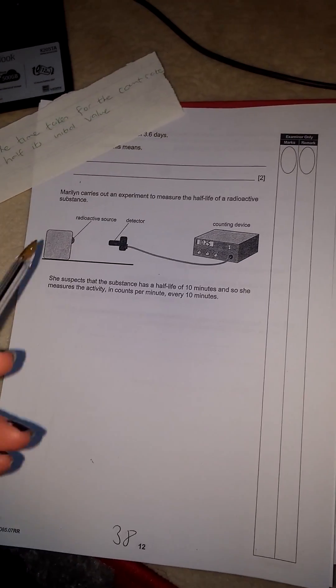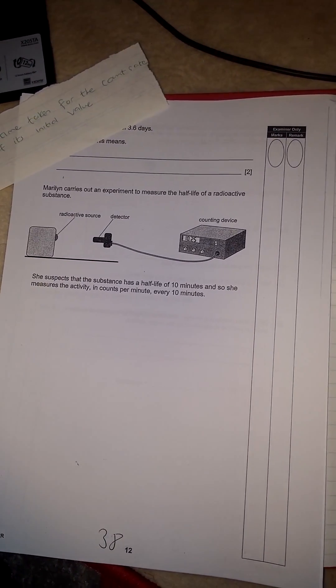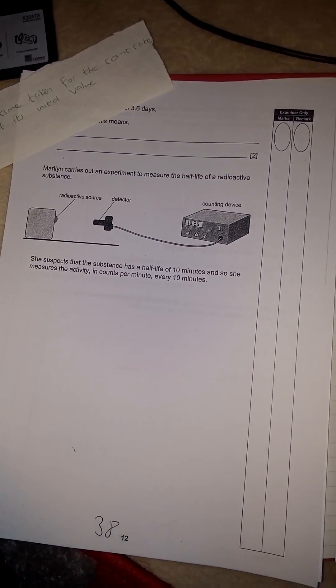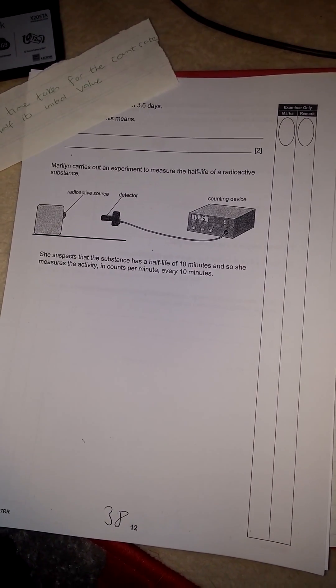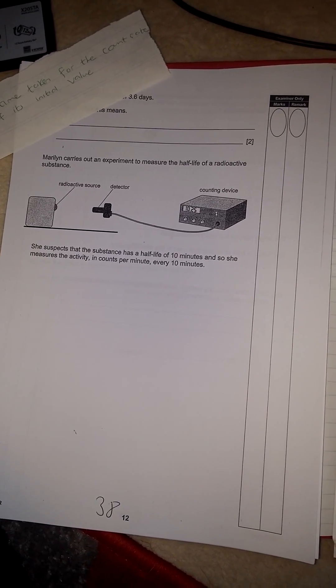Okay, it says here, Marlon carries out an experiment to measure the half-life of a radioactive substance. She suspects that the substance has a half-life of 10 minutes. And so she measures the activity in counts per minute every 10 minutes.